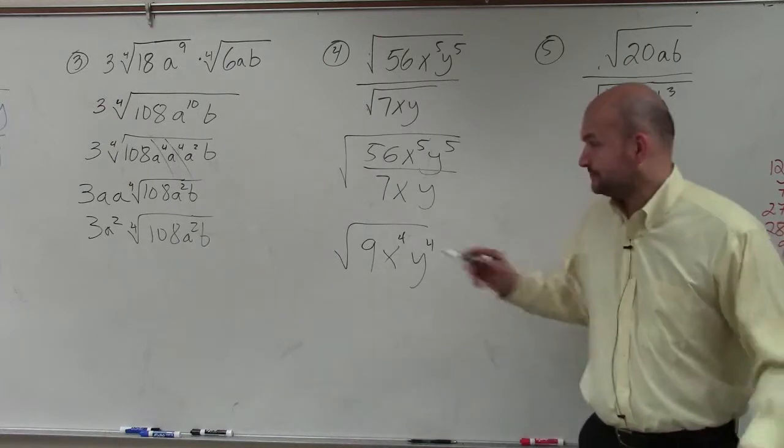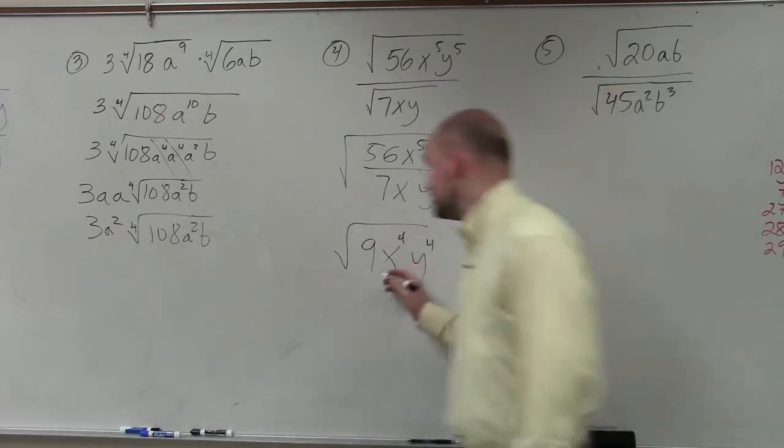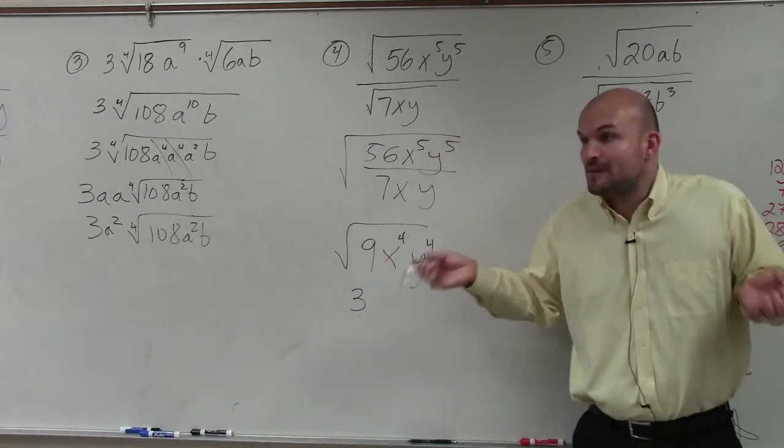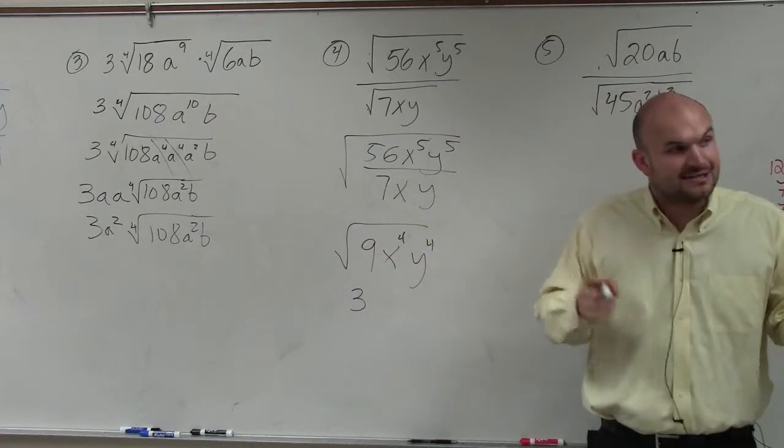So you have the square root of 9, which is 3. The square root of x to the 4th, what number multiplied by itself gives you x to the 4th? x squared. Yes.